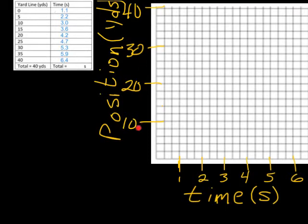Now, that we have scaled and labeled our graph, it's time to take the data that we have here and put it onto a graphical form. So, we'll start out with the time and the yard line mark.